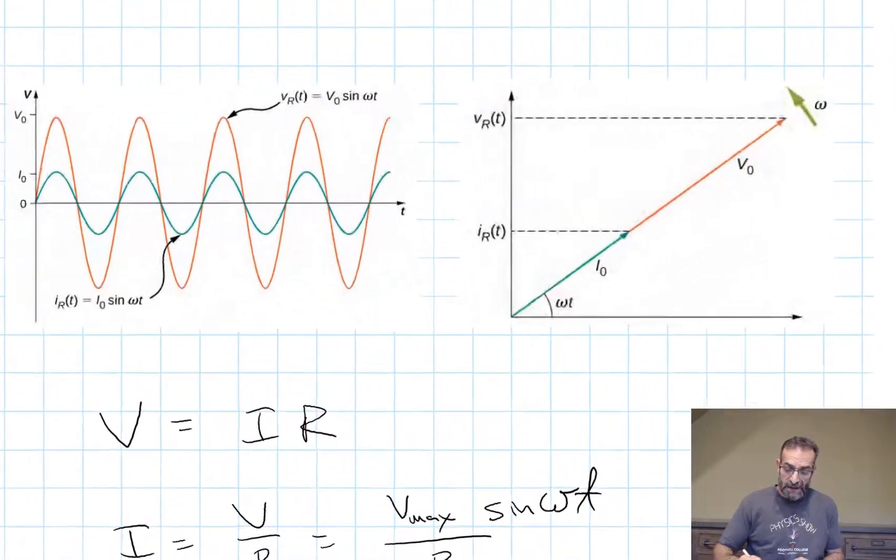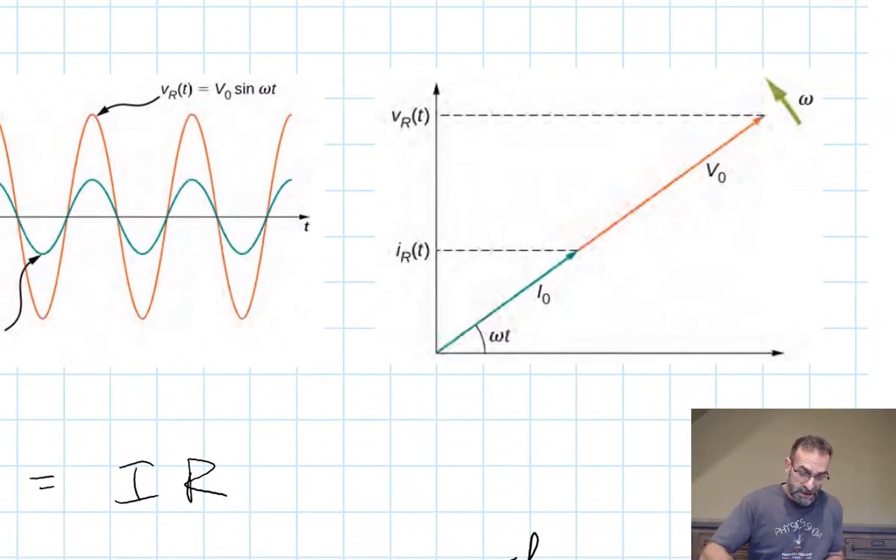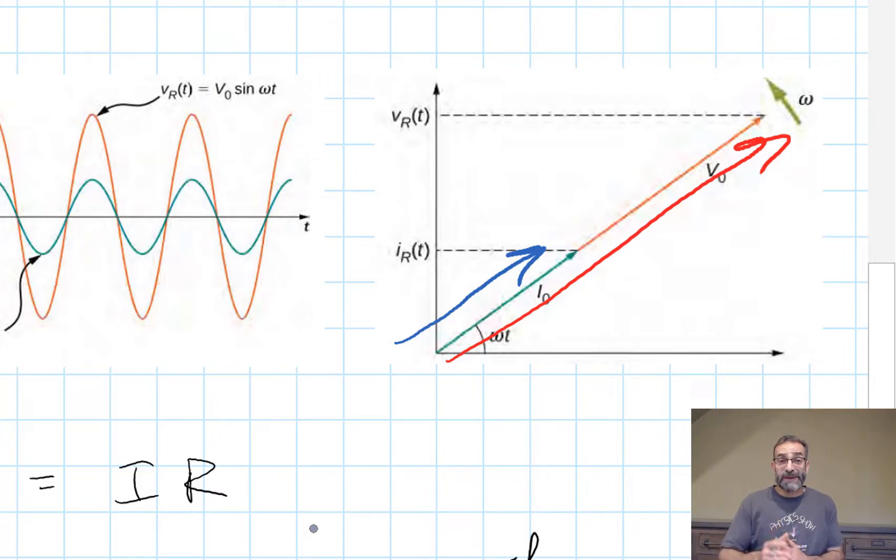So in a phasor diagram, we draw the voltage with this orange line here. And the current with that blue arrow. And they point in the exact same direction. They are said to be in phase. When one hits its maximum value, the other one hits the maximum value also. And the projection of those vectors onto the vertical axis gives us the value of the voltage across the resistor at that instant in time, or the value of the current through the resistor at that instant in time.